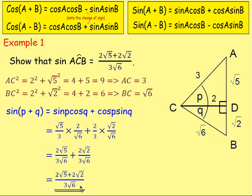And have we answered the question? Yes, we have shown that sin(ACB) is equal to (2√5 + 2√2) / (3√6). That is the answer we are getting.